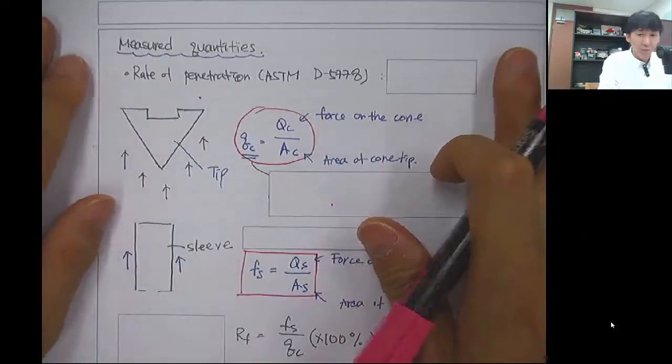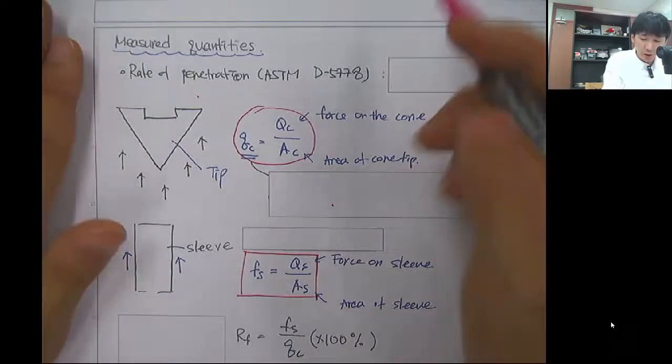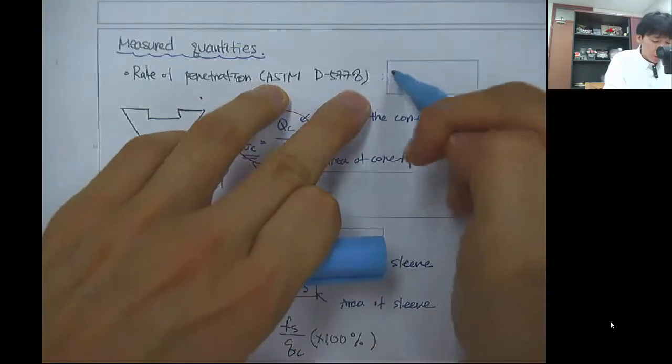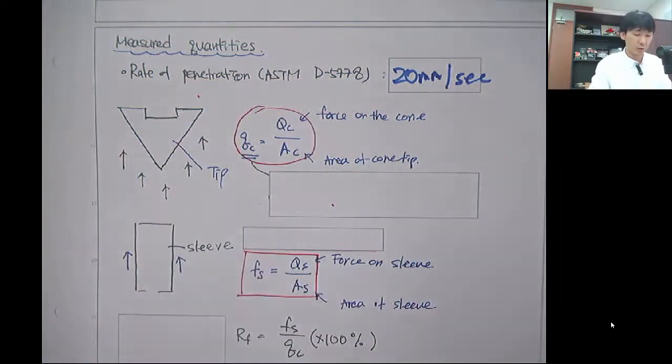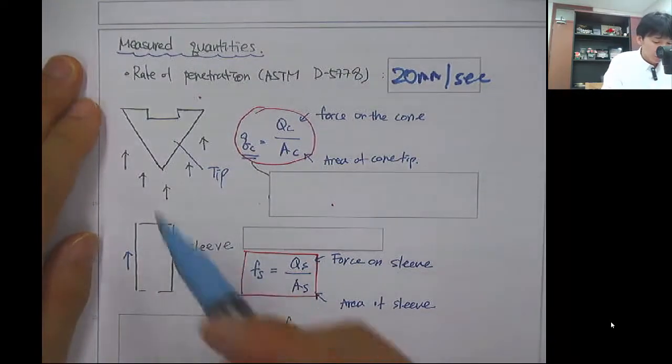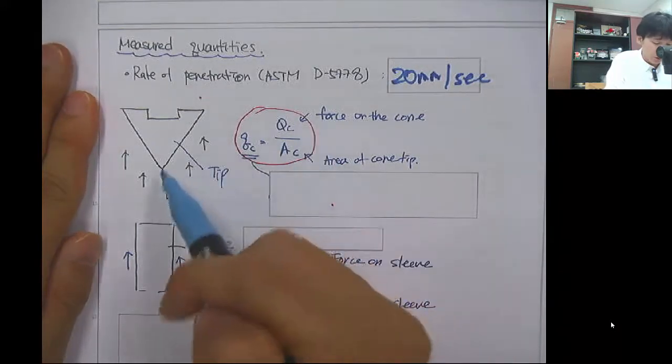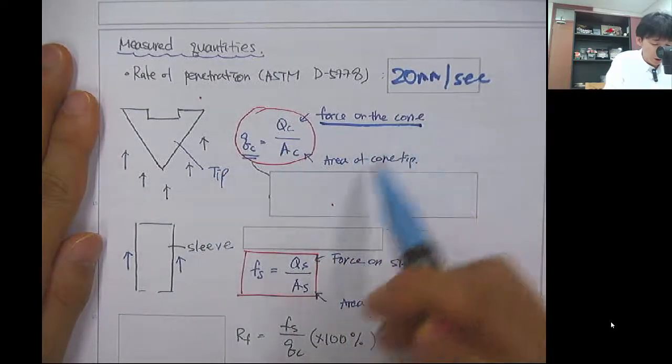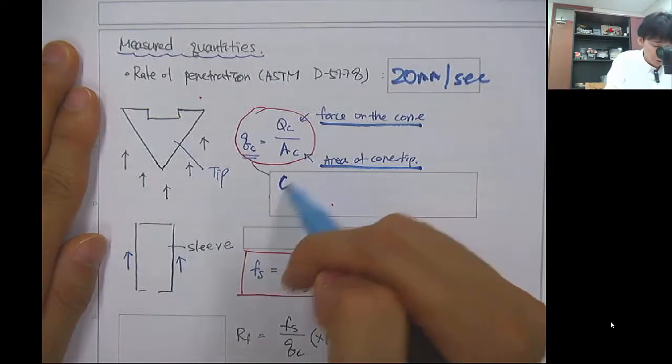So then what can we measure? During the penetration, we control the penetration rate to be about 20 millimeters per second, about 2 centimeters per second. During penetration, you can get the cone penetration resistance measured on the tip. You measure the force on the cone and divide by the area, then you get the cone resistance.